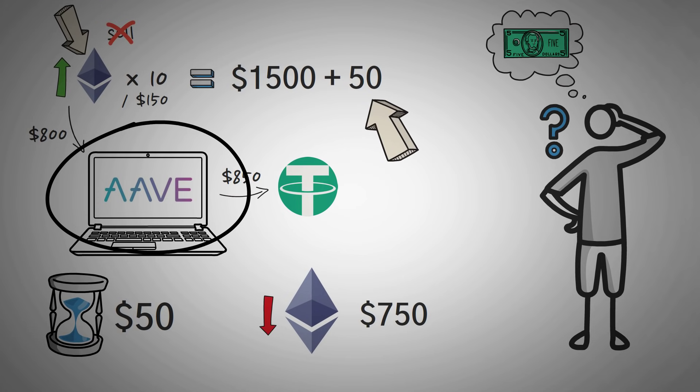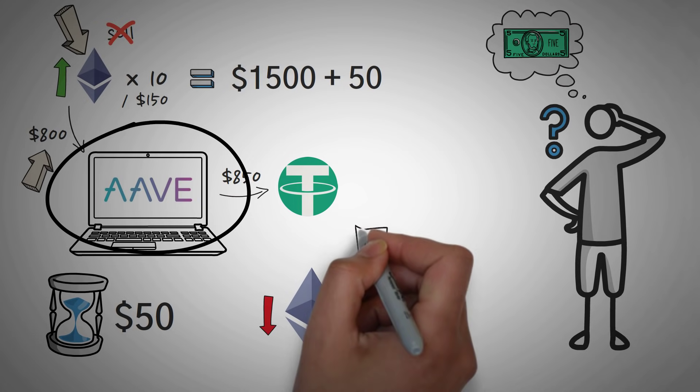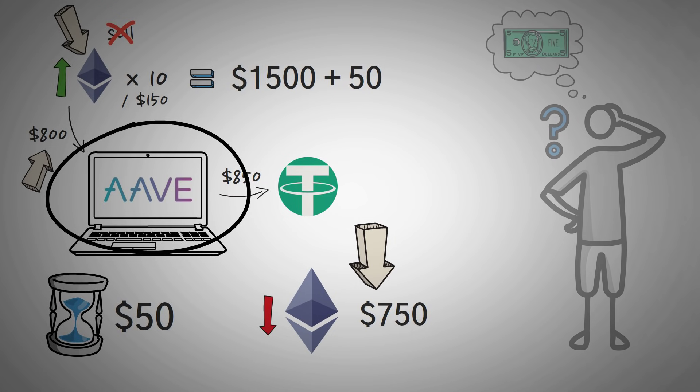Option A is to front the extra $50 to pay back the full loan, the $800, to get back all of your collateral. And option B is to just keep your $750 and lose your 10 Ethereum, which could be worth a lot.